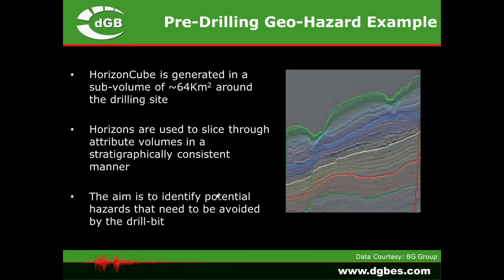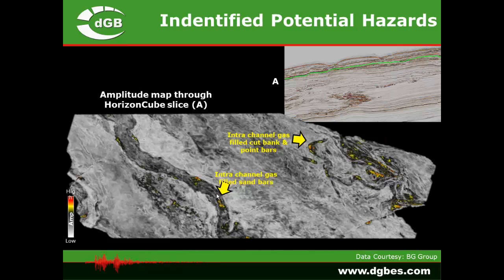Another application is pre-drilling geo-hazard assessment. In a small 8x8 square kilometer cube around a potential target well, we compute a HorizonCube and then extract attributes including seismic amplitude, energy, and similarity. These attribute volumes are Wheeler transformed and sliced to identify potential geo-hazards that need to be avoided by the drill bit. In this example, one such horizon slice in the Wheeler domain reveals channelized features with higher amplitudes within the channel complex — these may be gas-filled pockets that need to be avoided when designing the well.